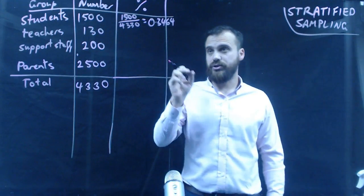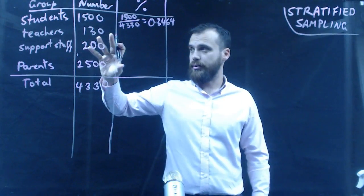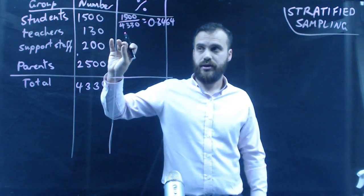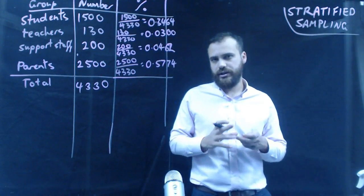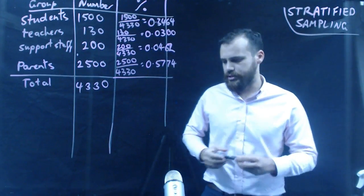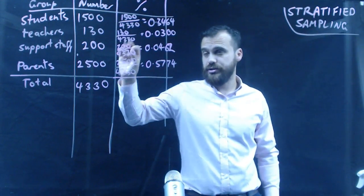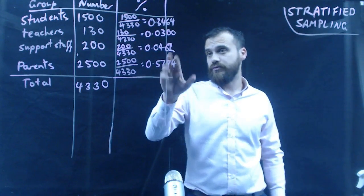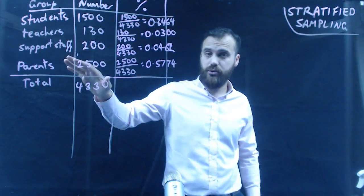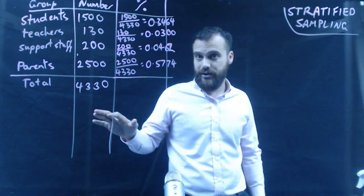That means that 34.64% of this population are students. So I'm going to go through and do the other three. So a whole bunch of calculation here, but what we end up with is this. 34.64% of our population are students. 3% of our population are teachers. 4.62% are support staff. And a whopping 57.74% are parents.